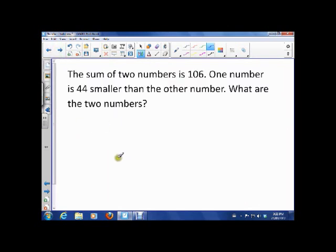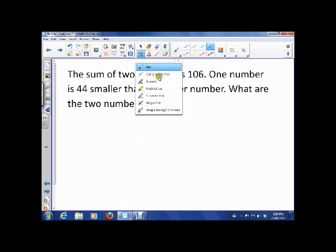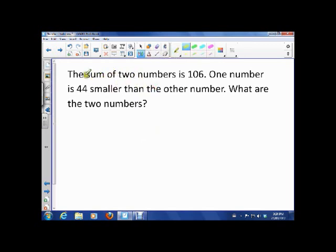So here's the other one. The sum of two numbers is 106. This one is really stripped down to its bare bones. It just says the sum of two numbers is 106 and one number is 44 smaller than the other one. What are the two numbers? So the information that we have here is the sum is 106 and one number is 44 smaller than the other.